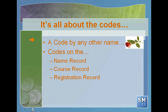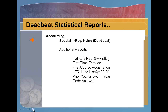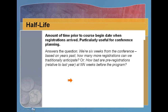We talked about codes and the importance of those. We showed you a tool to track fulfillment of codes to get Wanda involved. Let's go into reports. The deadbeat area is my favorite — there are several statistical reports there. Under the additional reports area: half-life, first-time enrollee, first course registration, learn life history, prior year growth by year, by quarter, by month, and code analyzer. Let's go into those.